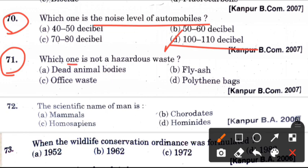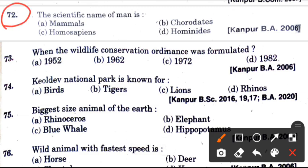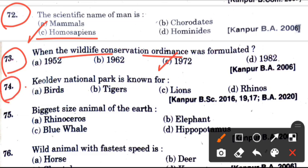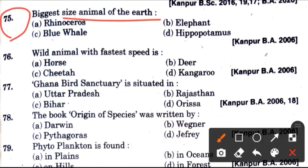Seventy-first question: Which one is not a hazardous waste? Answer is C, that is office waste. Next question: The scientific name of man is? Answer is C, which is Homo sapiens. Now, seventy-third question: When was the wildlife conservation ordinance formulated? Answer is C, which is 1972. Now, seventy-fourth question: Keoladeo National Park is known for? Answer is A, which is birds. Now, seventy-fifth question: Biggest size animal of the earth is? Answer is C, which is blue whale. Now, wild animal with fastest speed is? Answer is C, that is cheetah.